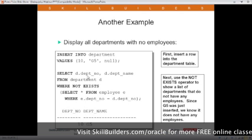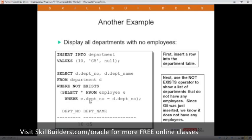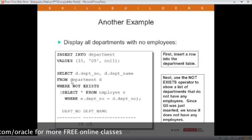I'm going to select some columns from the department table where not exists, select star from employee E, where E.depno equals D.depno, and that references the department number here from the outer query. And then it loops through.